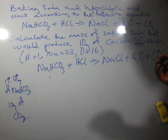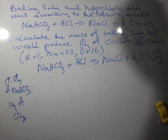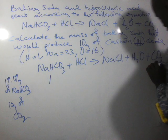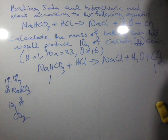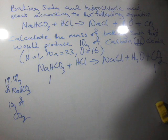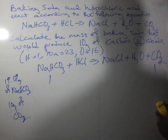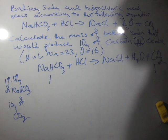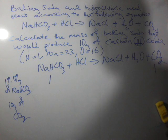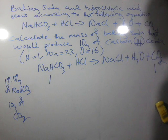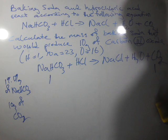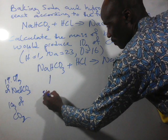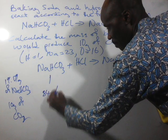To solve this, we use the same approach. We know that one mole of sodium hydrogen carbonate gives one mole of carbon dioxide. One mole is also equal to the molar mass. So one mole of baking powder has a molar mass of 84 grams per mole.